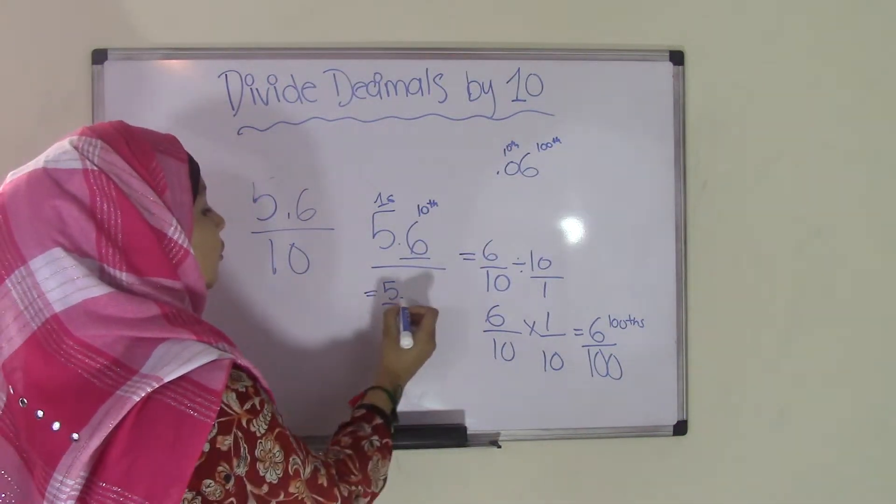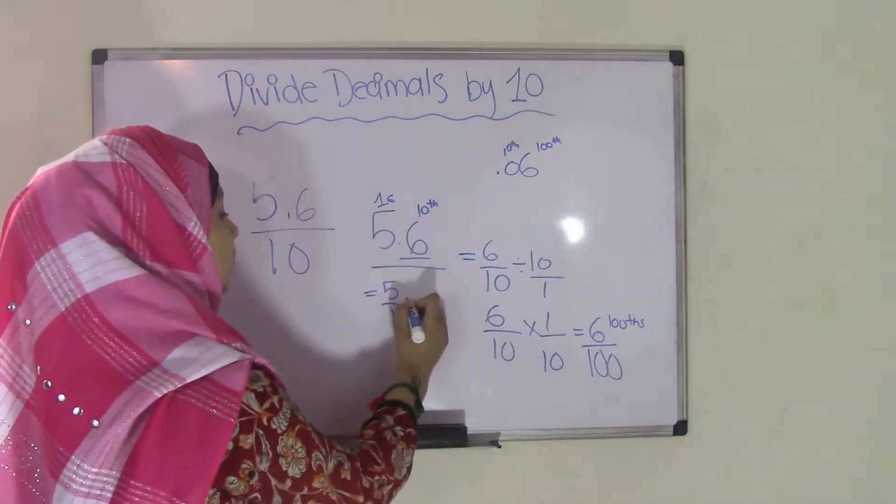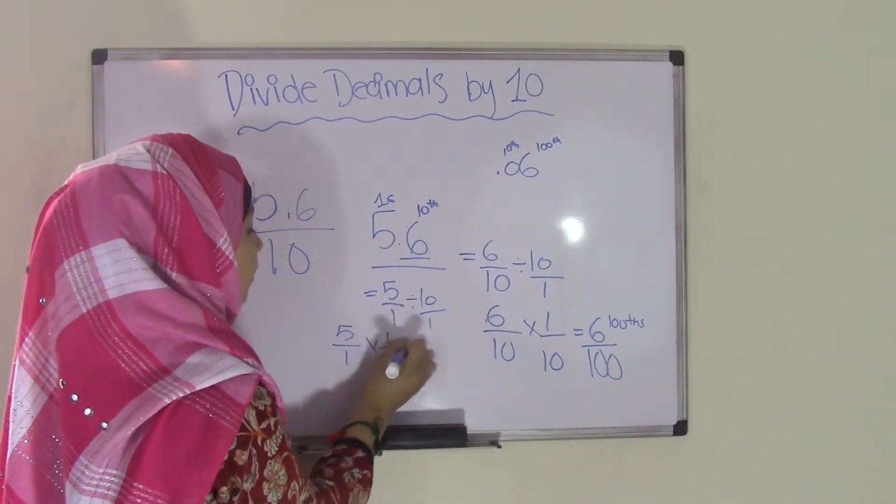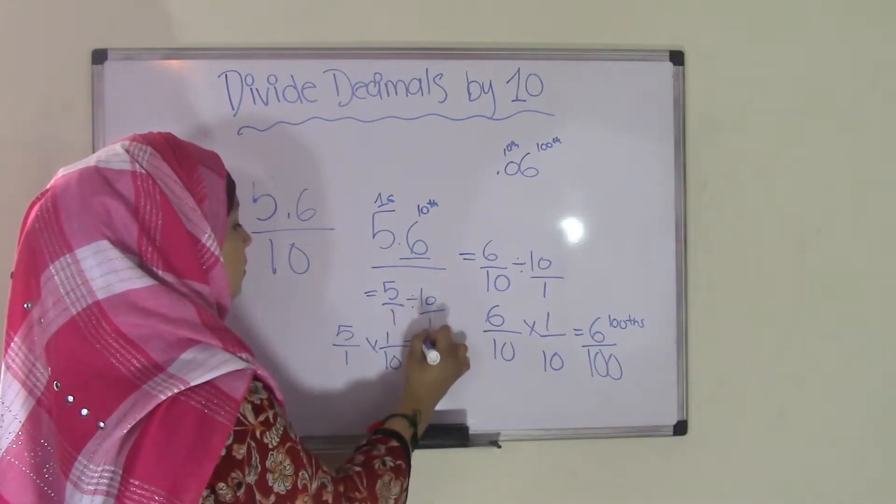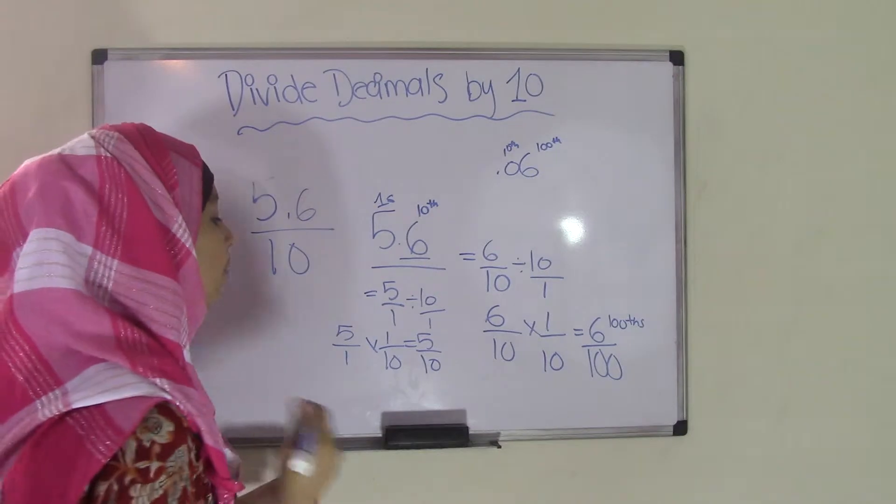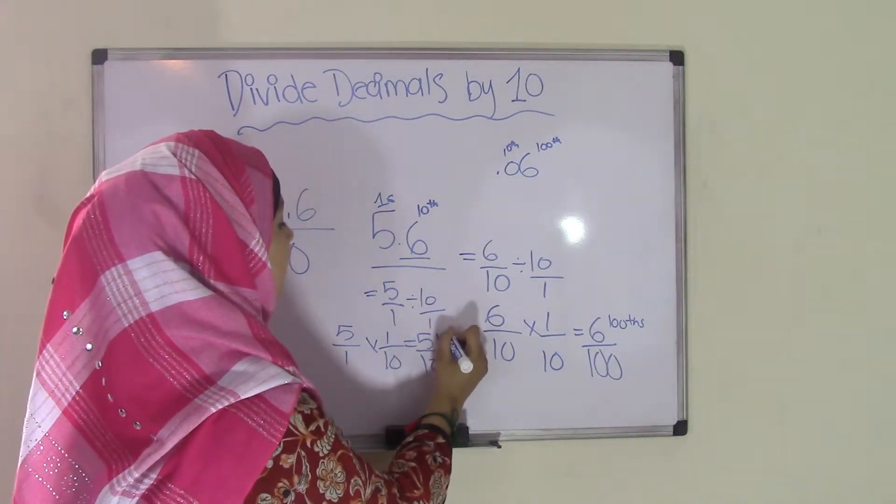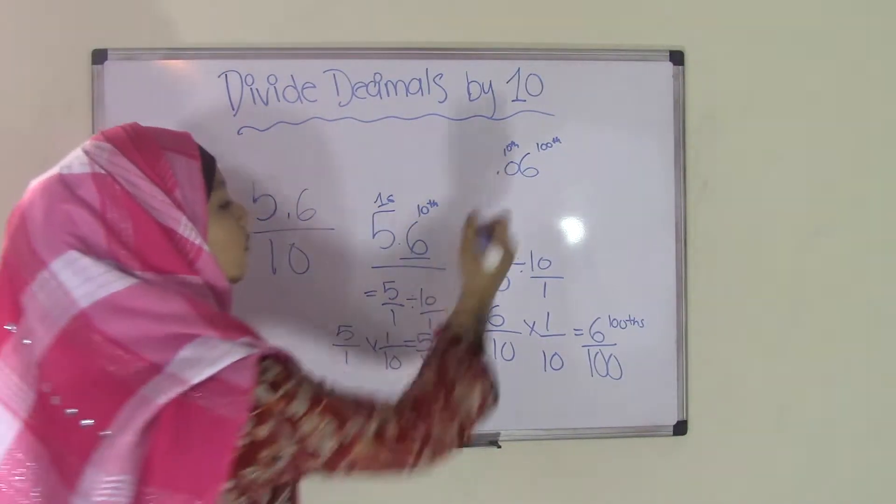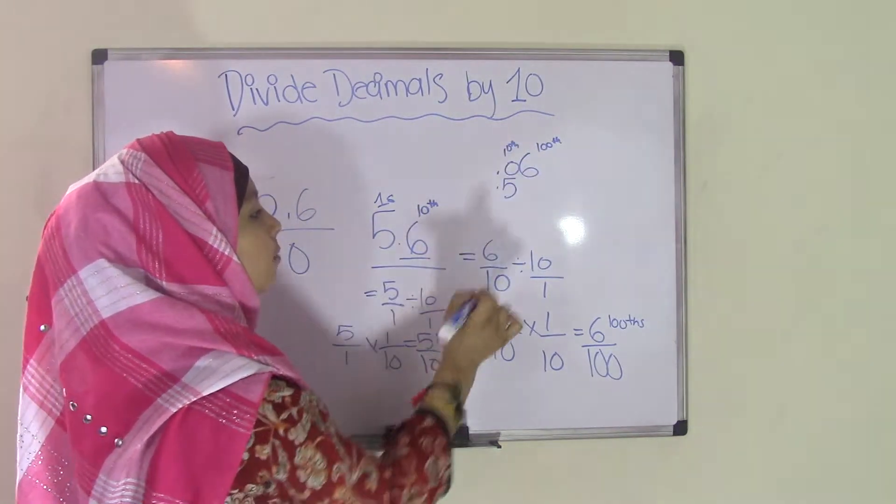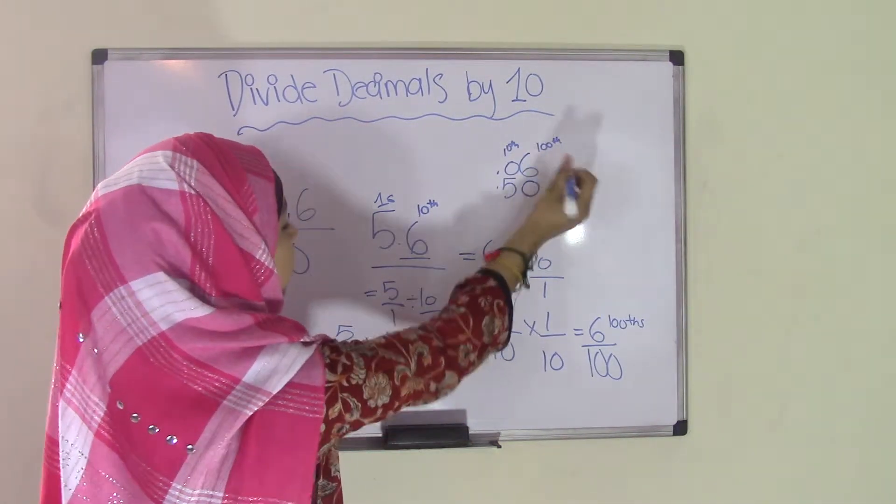Now you come over here to the 5 over 1. You need to divide that by 10 over 1, or you write this as 5 over 1 times 1 over 10, which means it becomes 5 over 10. So that means the 5 ones have now become 5 tenths. We write 5 tenths, and we can add a 0 here for the hundredths.